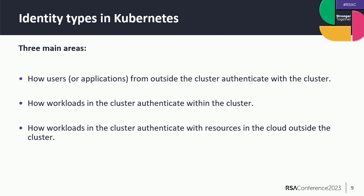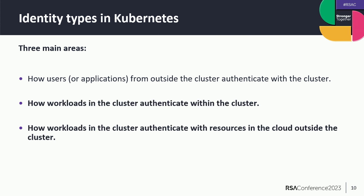Now let's talk about identities in Kubernetes. There are three main areas. First: how users or applications from outside the cluster authenticate with the cluster — for example, how a DevOps pipeline deploys resources. Second: how workloads inside the cluster authenticate within the cluster. Third: how workloads in the cluster authenticate with cloud resources outside the cluster — for example, if an application needs access to cloud storage. In this session we focus on points two and three, as they are relevant for inner-cluster and cluster-to-cloud lateral movement.